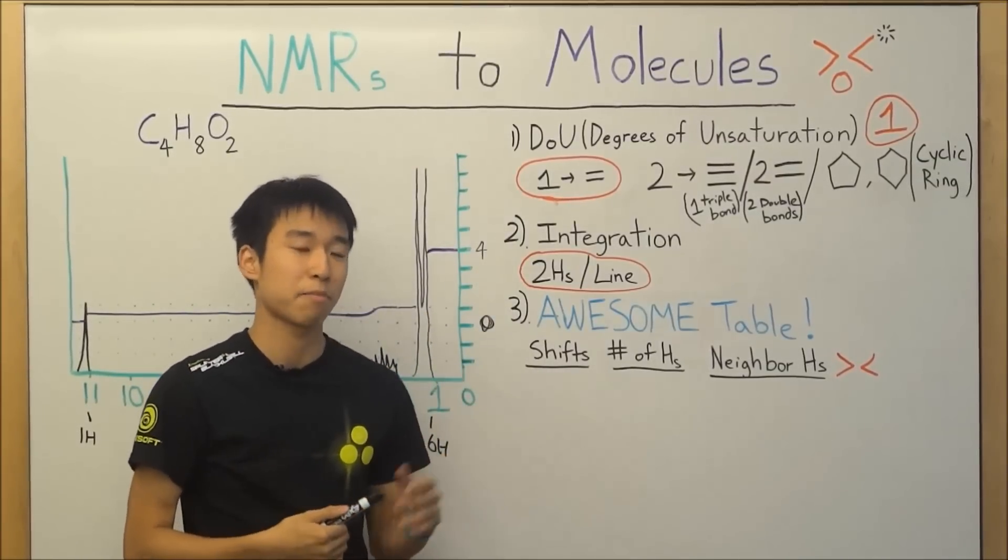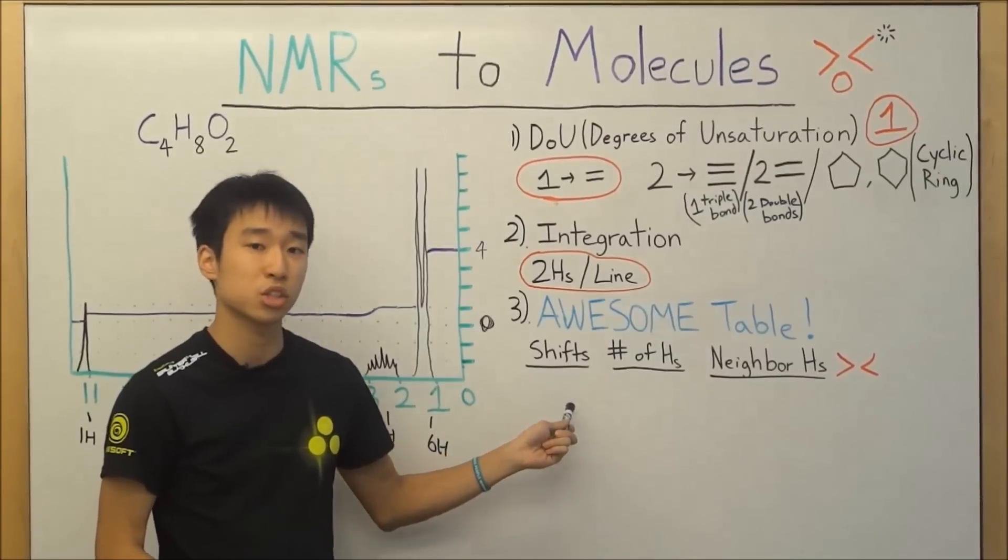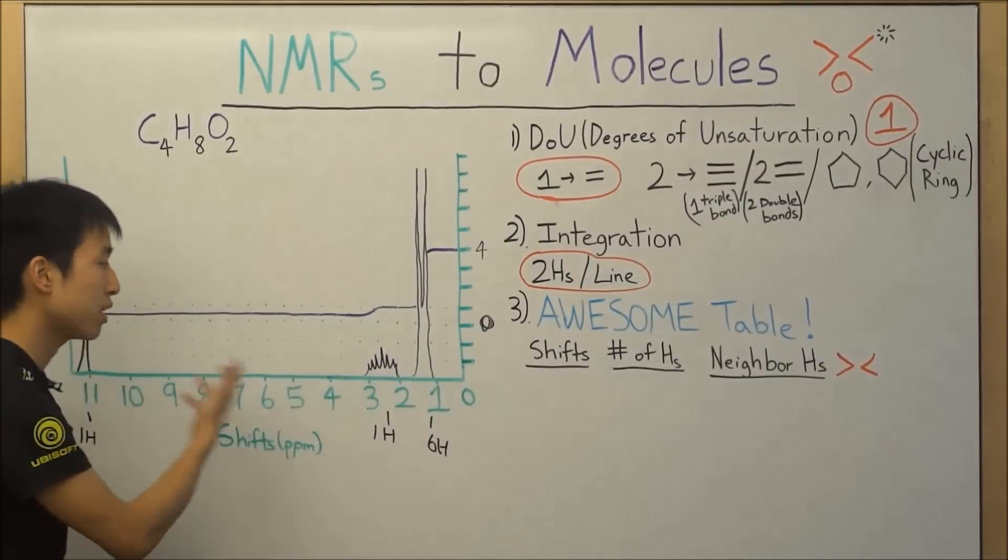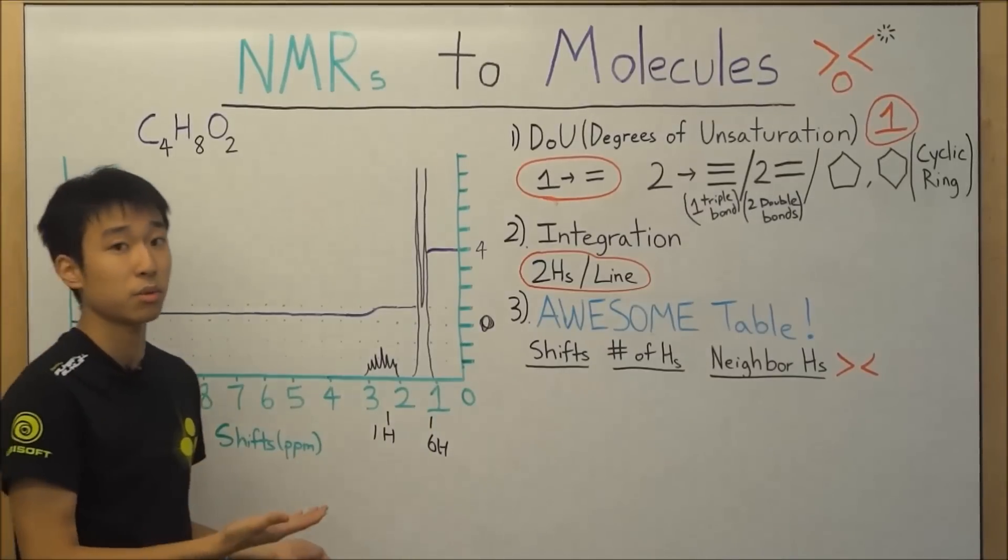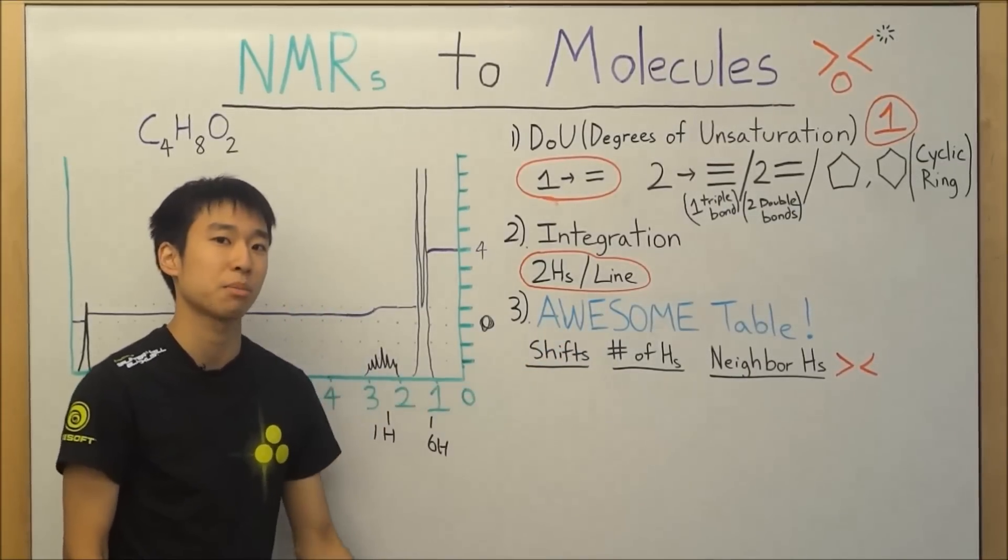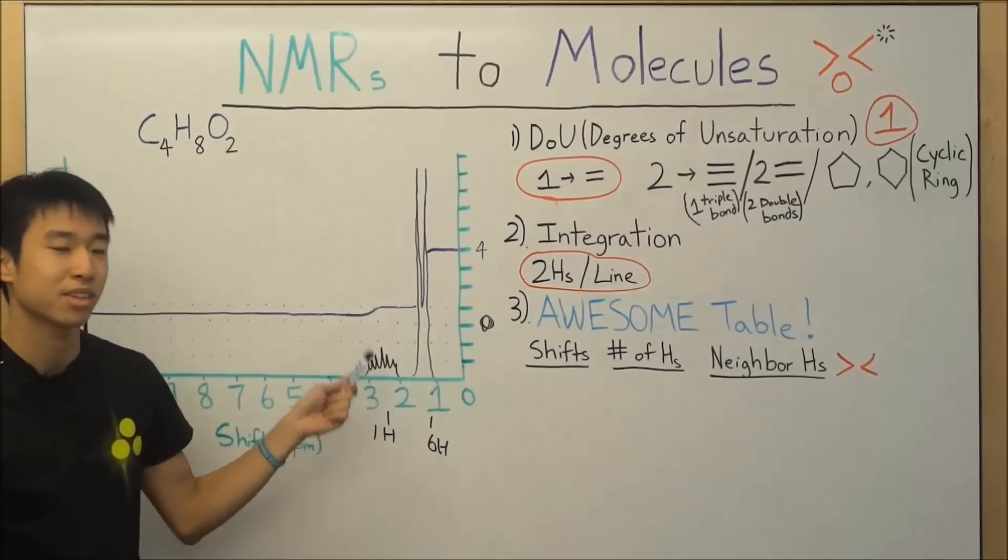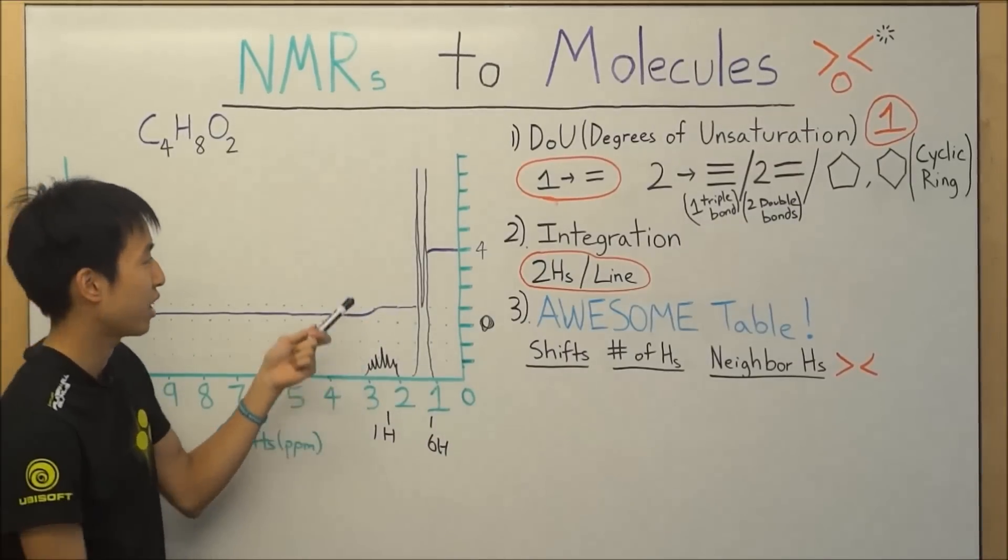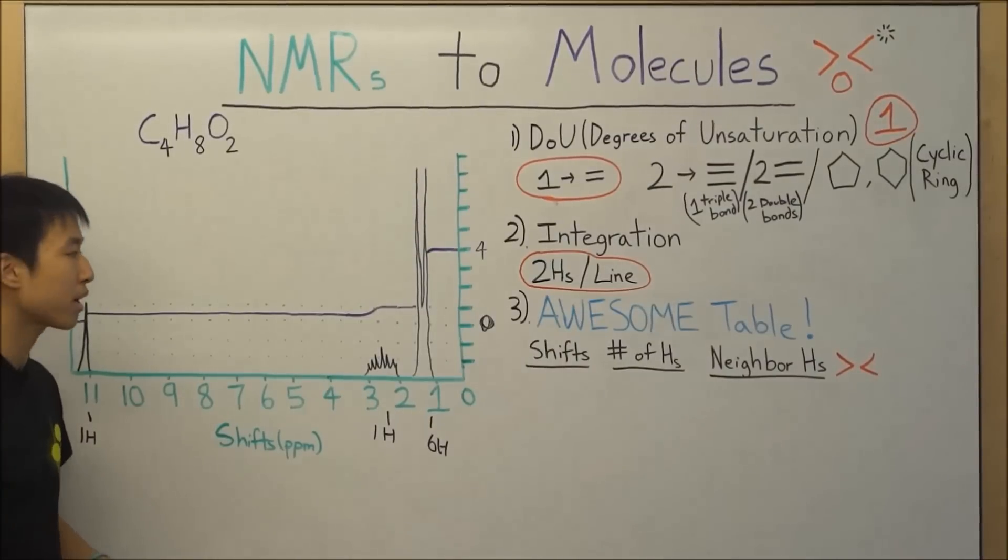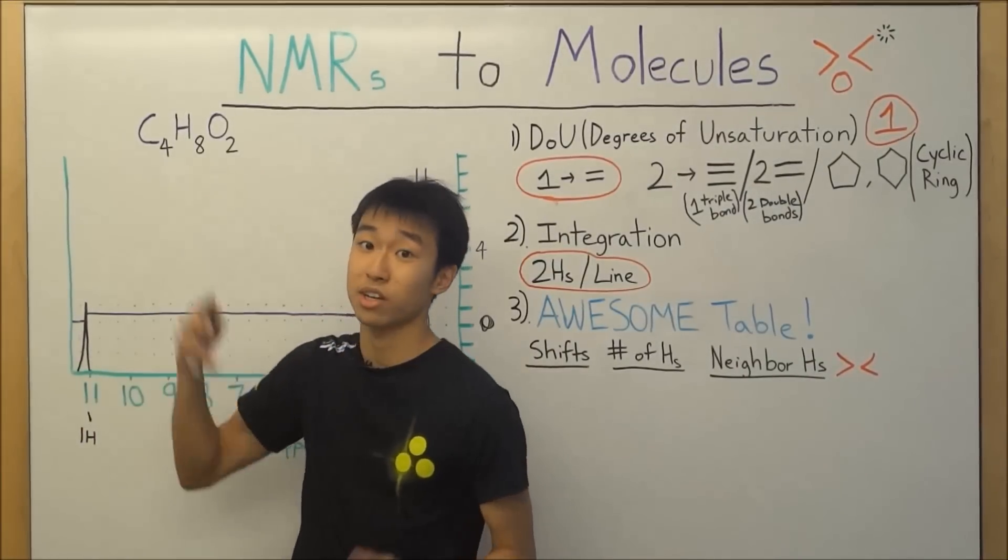So for our awesome table we have three columns: the shifts at which the signals appear, the number of hydrogens that they actually represent, which we already did with integration, so see that was really helpful. And then we need to figure out the number of hydrogens that are pissing off these hydrogens and causing them to split, like our septet over here and our doublet over here. Okay, so yeah give that a shot and come back in a couple seconds and we're going to finally piece this sucker over here all together.